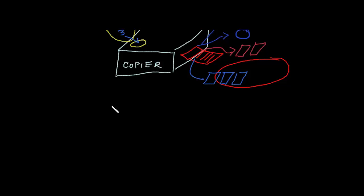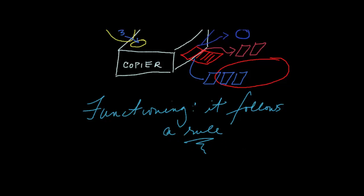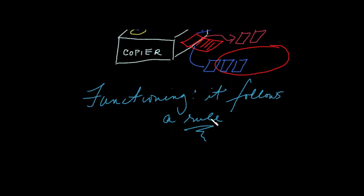In terms of something functioning properly — when it works, we know what to expect — it has to follow the rule. If something is functioning, it follows the rule. For a copier, the rule is: if you push the button for a number, you expect that number out. The breakdown came when we pushed for five copies and got two, or got none. The copier did not follow the rules. In mathematics it is very important that something not only works but also follows a certain rule.